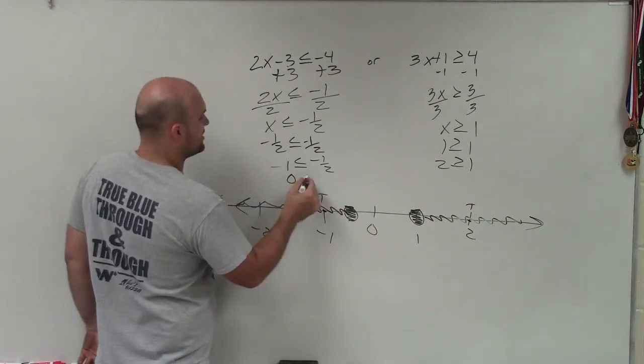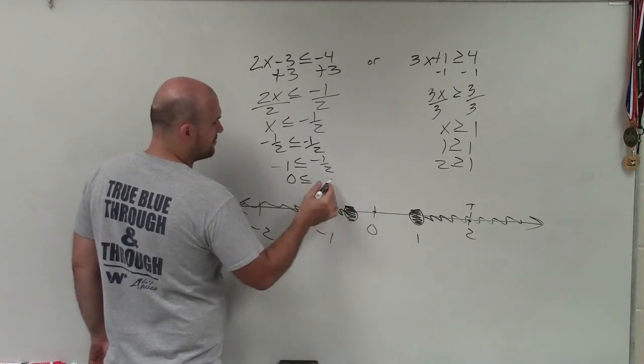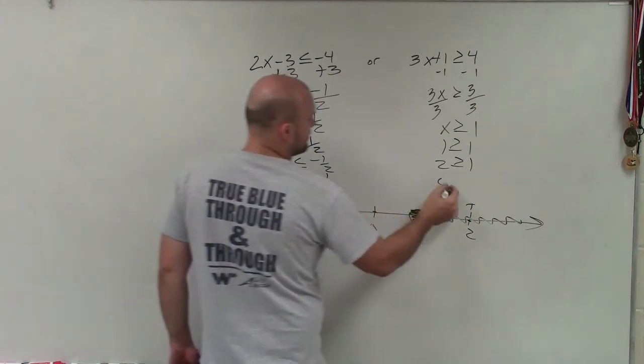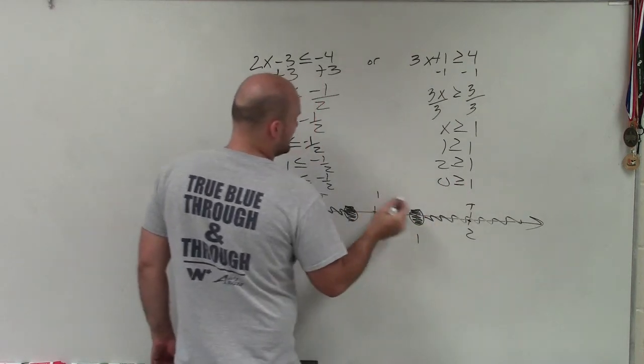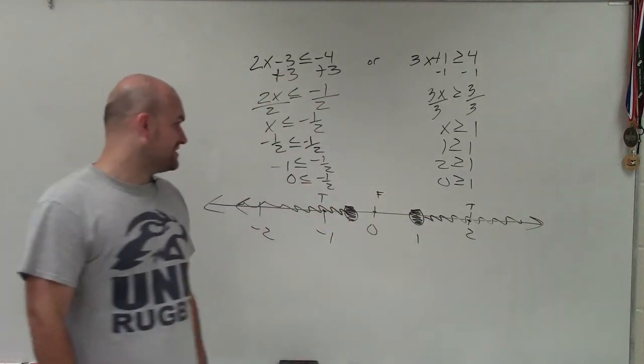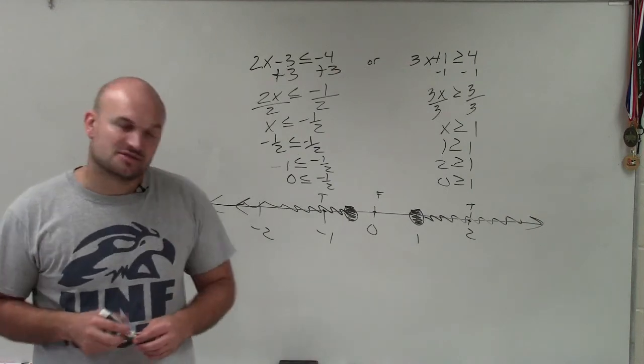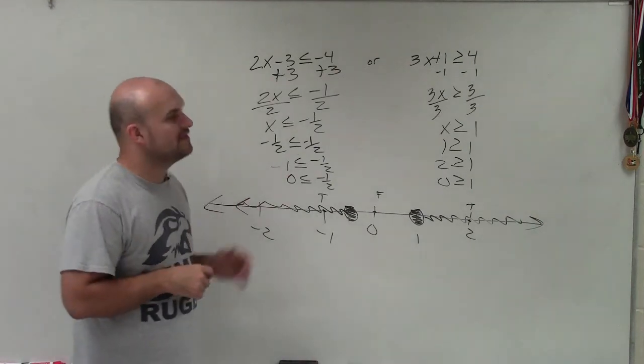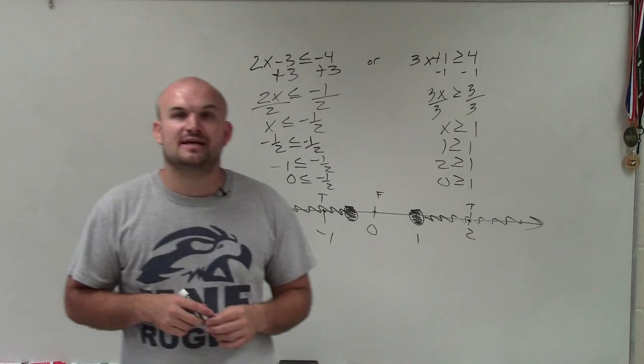And a lot of times, just to make sure you didn't make a mistake, I would choose a third test point in between them. And you can see, for both of these equations, when I've used the test point 0, it's going to be false. So there you go, ladies and gentlemen. That is how you graph and solve a compound inequality. Thanks.